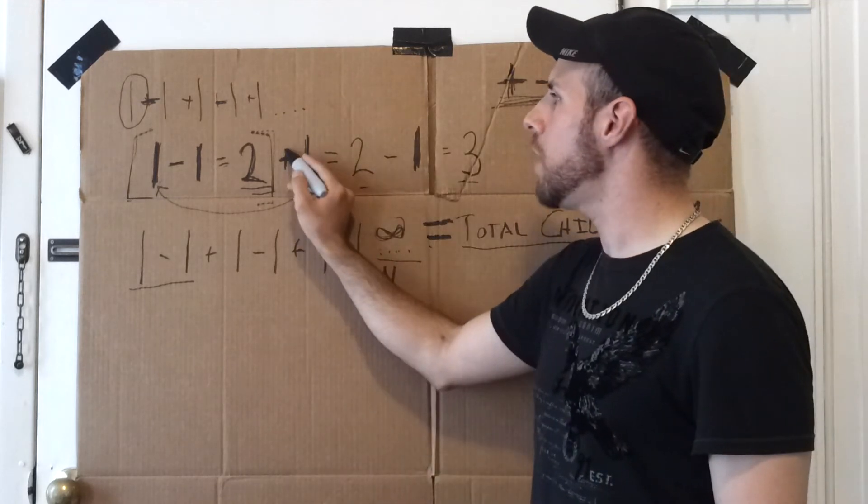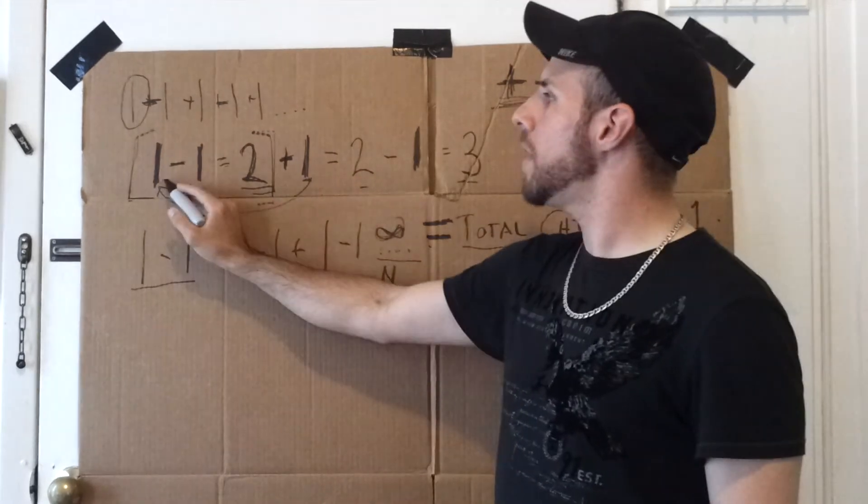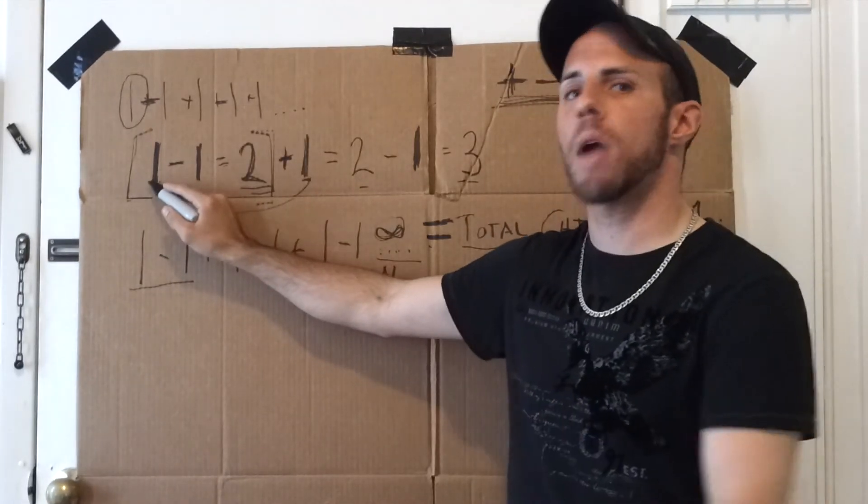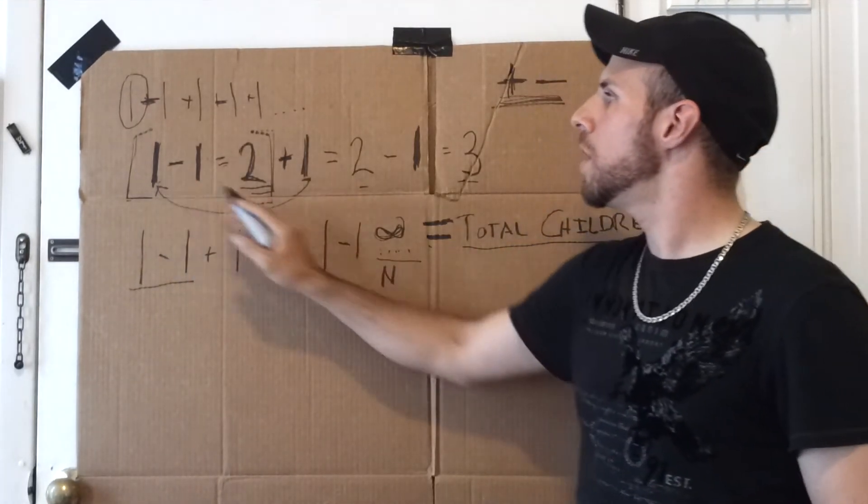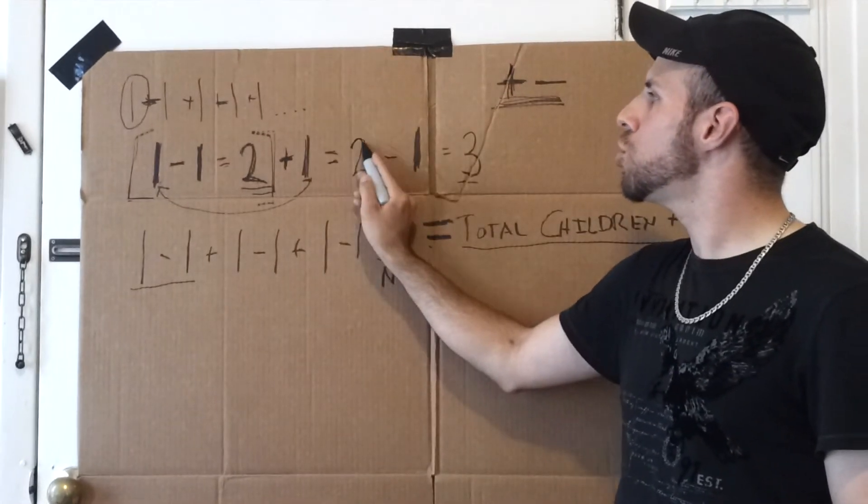You're not gaining anything by adding 1 to this one. So you add 1 fetus to the woman, and she just becomes a pregnant woman. She's still 1 person. So now, in this case, 2 plus 1 equals 2.